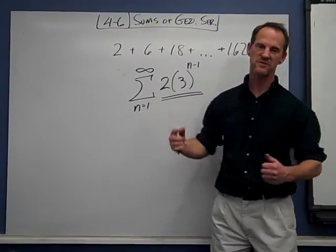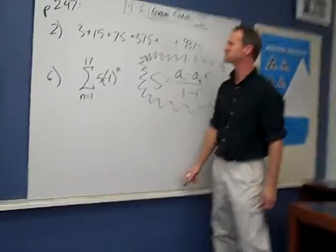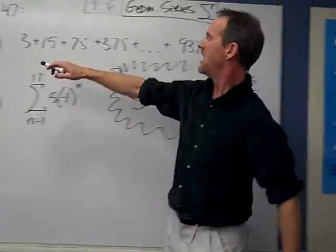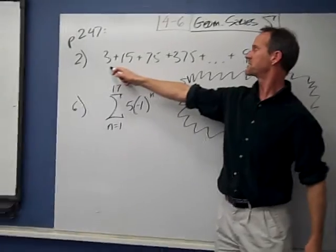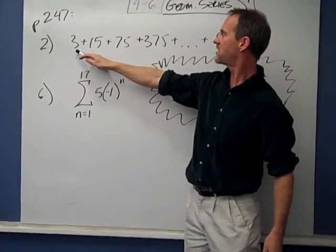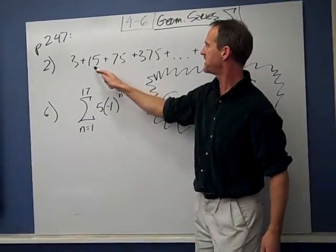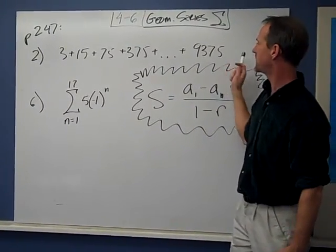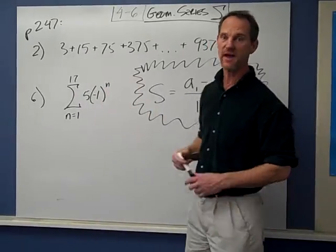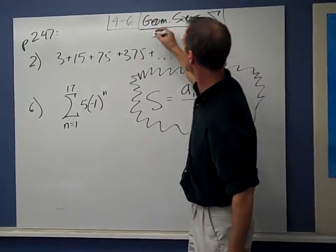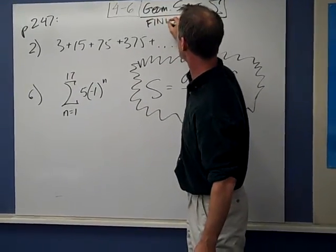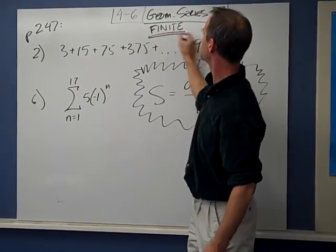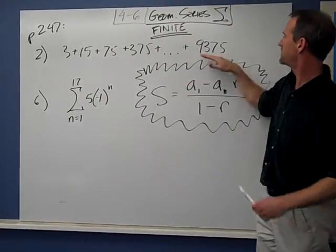Now we're going to come over to this other board, so if Lily you'd follow me over here. We're going to do two examples from the book to get started. This is one that meets the first condition. You'll notice that this 3 plus 15 plus 75 goes up, but then it stops at a large number, but it does stop. So we can add this up because it's a finite geometric series, meaning it stops at a certain point.